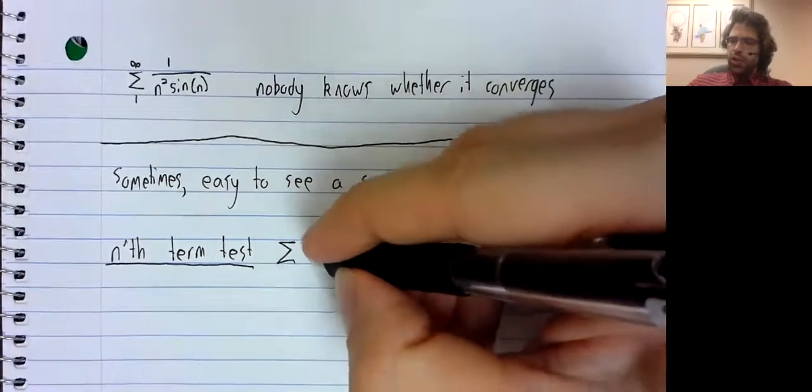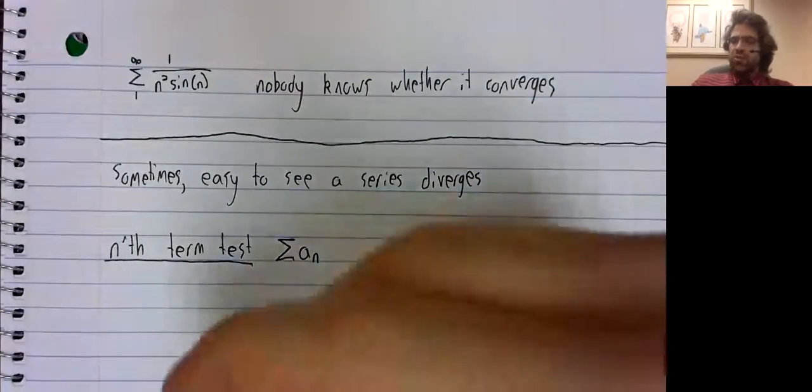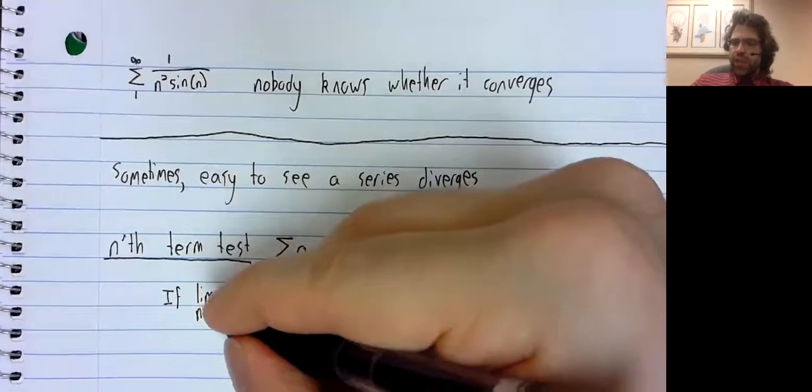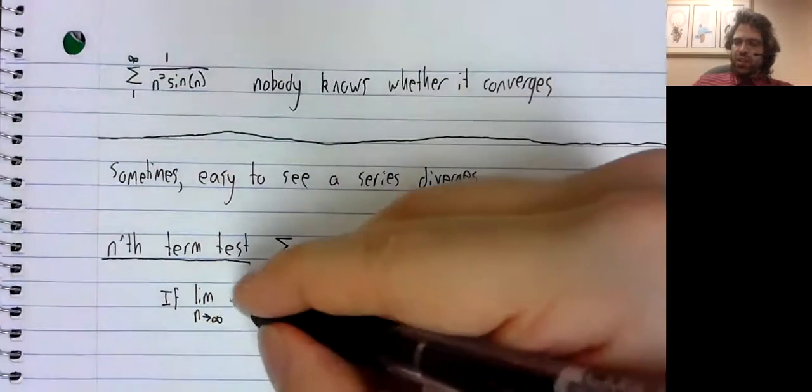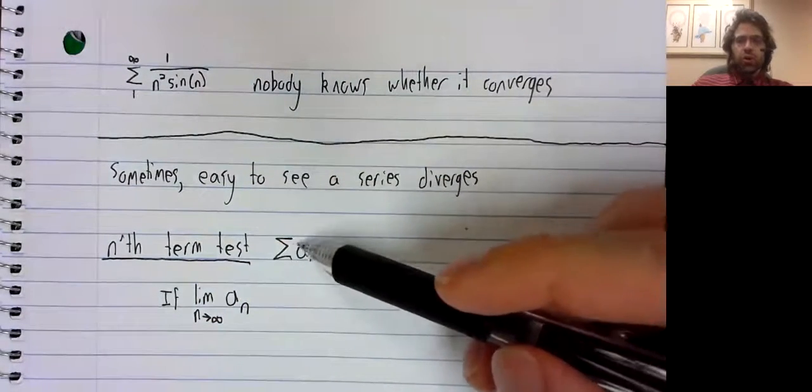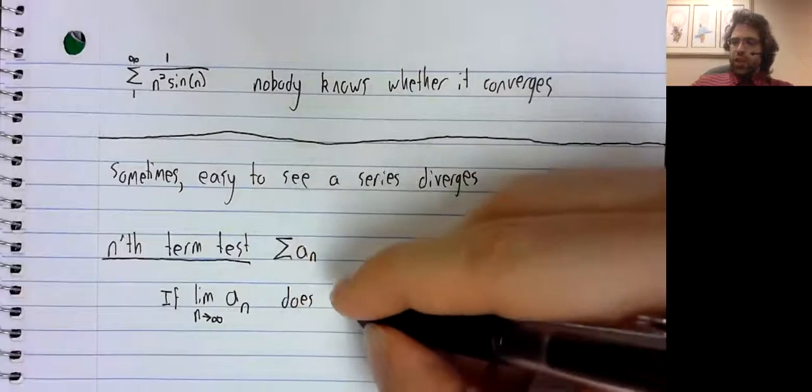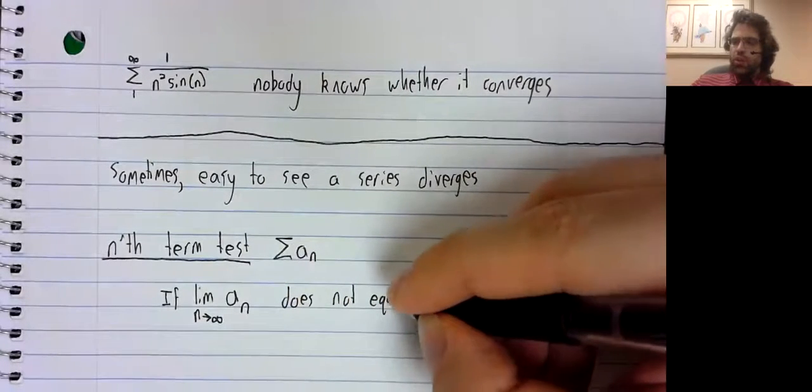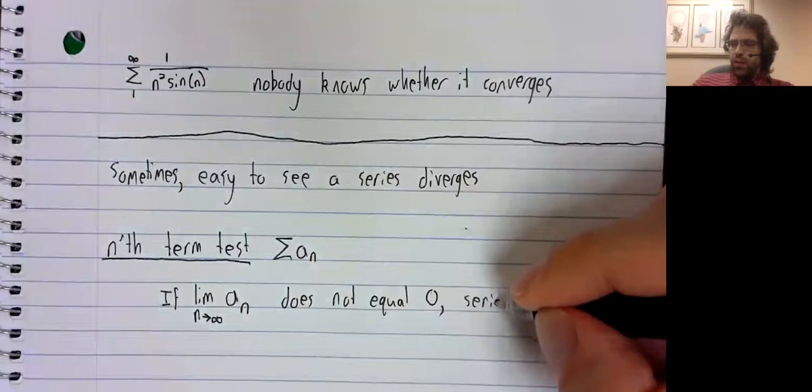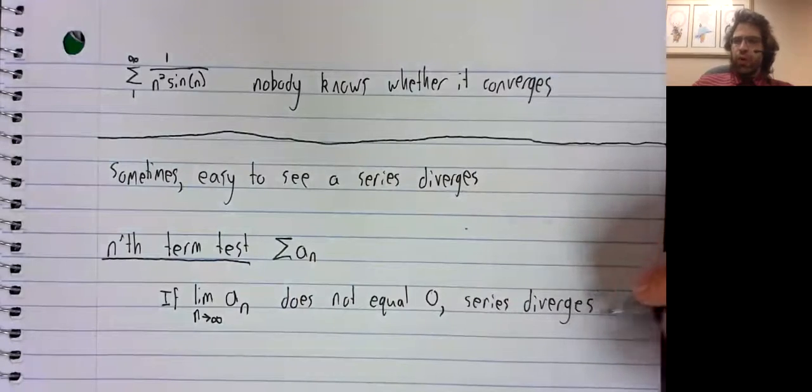We're looking at an infinite series, and the nth term test says: if the limit as n goes to infinity—not of the partial sums, but just the terms of the series—if this limit does not equal zero, the series diverges.